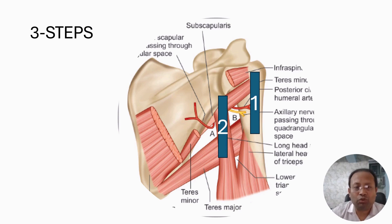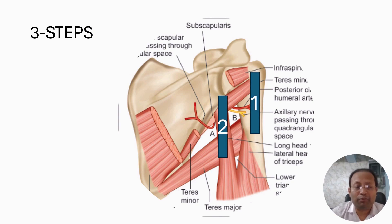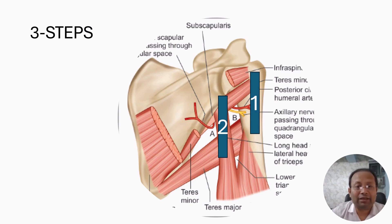In Step 2, the ultrasound probe will be moved and placed in a long axis view of the long head of triceps. We will then be able to find the short axis view of teres minor and teres major.